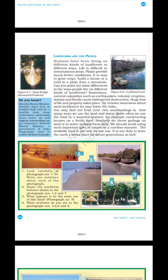Landforms and People: Humans have been living on different kinds of landforms in different ways. Life is difficult in mountainous areas; plains provide much better conditions — it is easy to grow crops, build a house or a road on a plain than on a mountain. Sometimes natural calamities such as earthquakes, volcanic eruptions, storms and floods cause widespread destruction and huge loss of life and property. By creating awareness about such incidents, we may lower the risk.